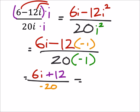So I can rearrange this to be 6i, because I have that common denominator, over negative 20, and then plus 12 over negative 20. Now we'll have to use that commutative property to rearrange this so that it's in a plus bi form.